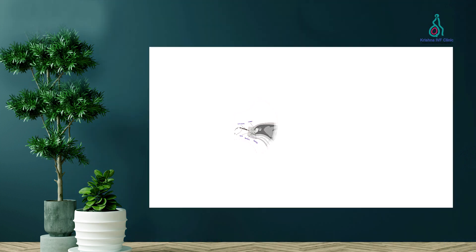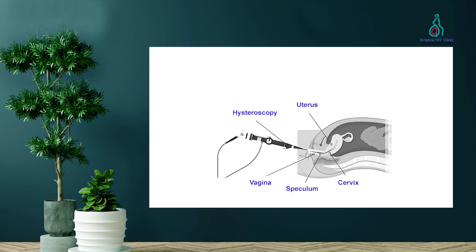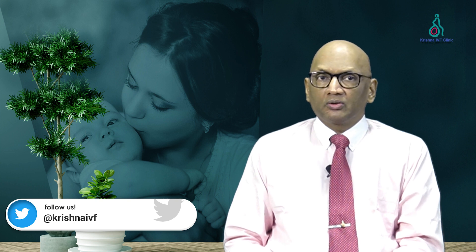The third group of investigations done in a pre-IVF assessment — though not done in every center, depending on the protocol they follow — is hysteroscopy. Hysteroscopy is a minimally invasive procedure done to assess and visualize the inside of the uterus for any structural abnormalities, the shape of the uterine canal, and the size of the uterus.